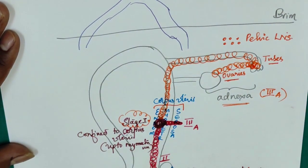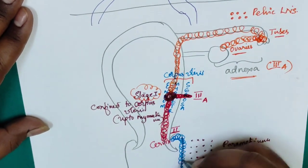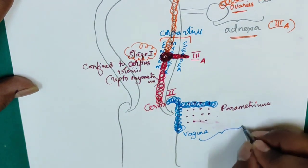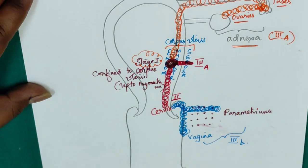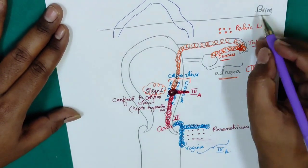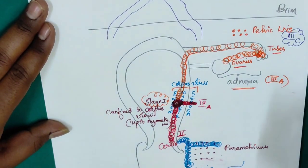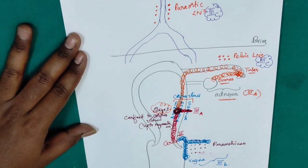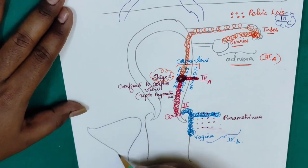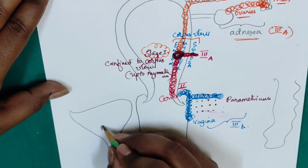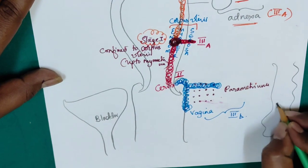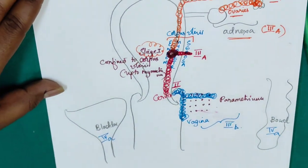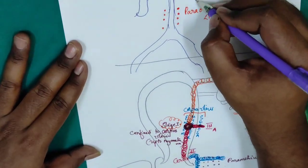When the tumor extends to vagina and parametrium — see here the tumor is extending to vagina and parametrium — that is stage 3b. Pelvic lymph nodes is 3c, and para-aortic lymph nodes also is 3c. And stage 4 — you all know it is metastasis. Regional metastasis means bladder and bowel, that is 4a. And 4b is lungs — that is distant metastasis.